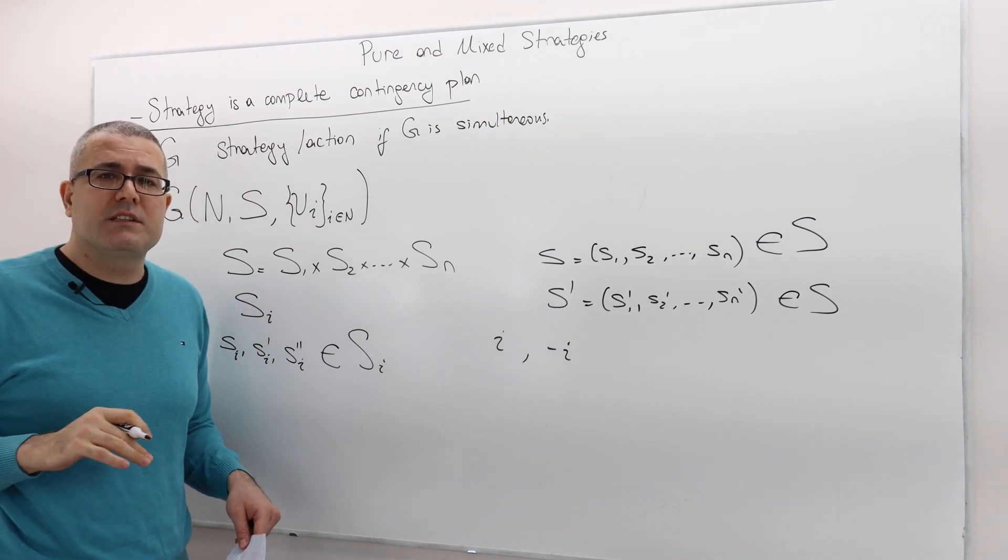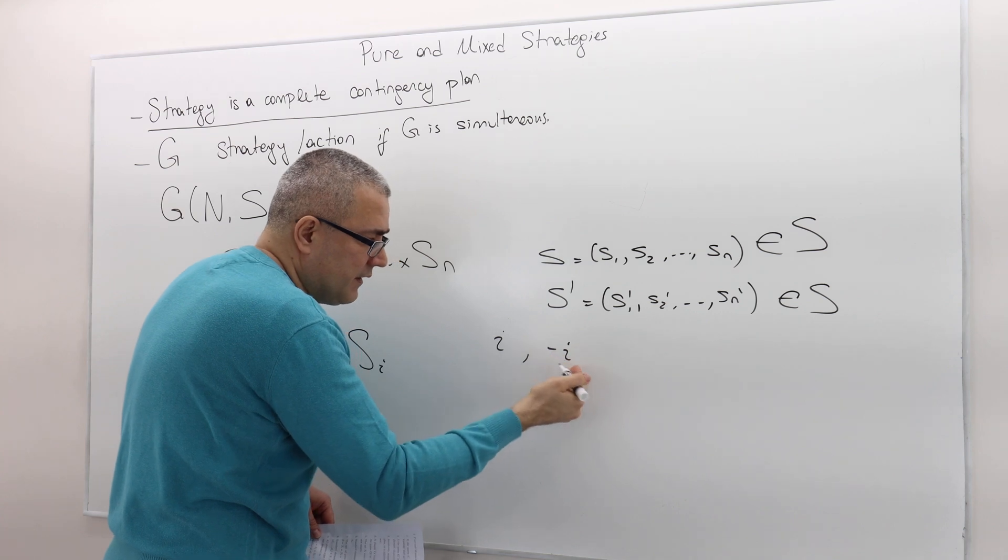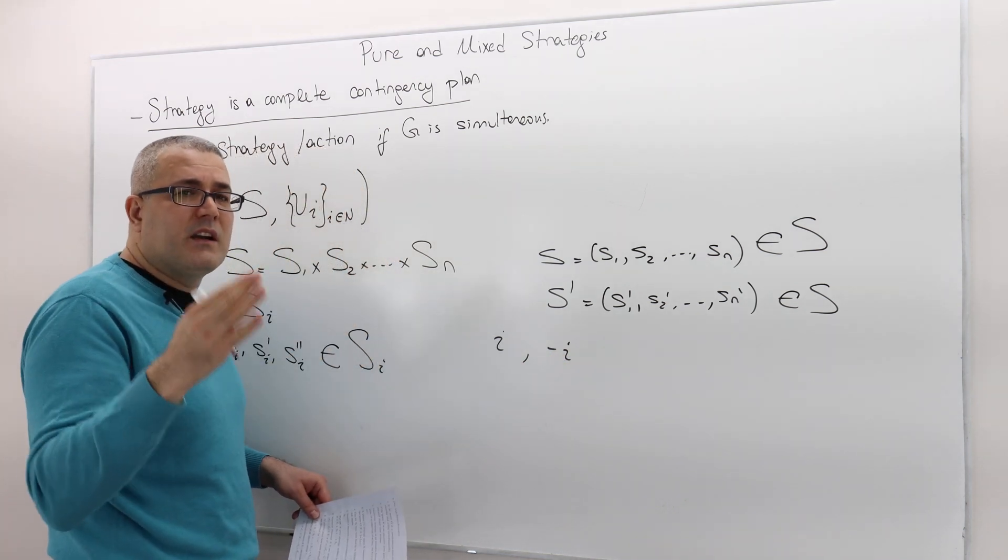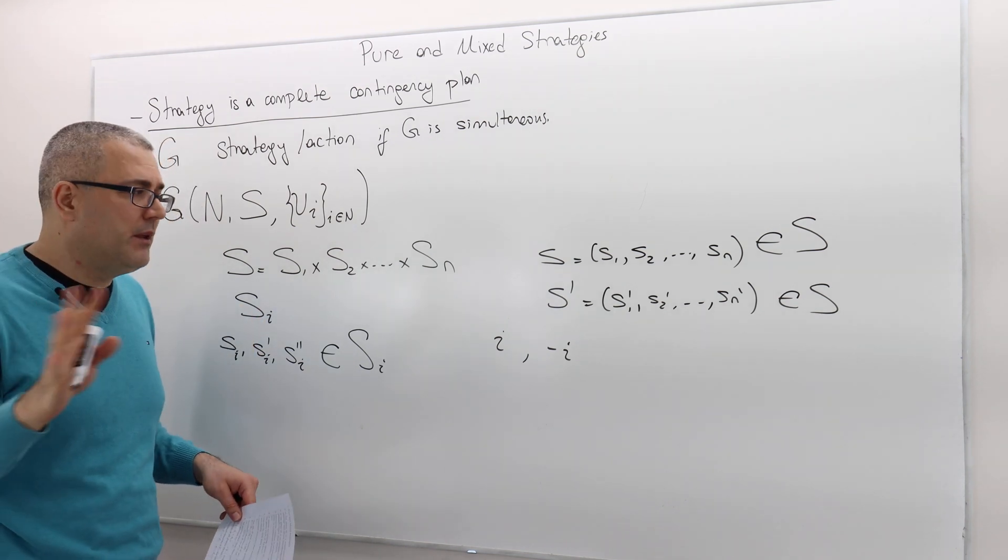If you have, for example, 100 players, minus I basically means all the other 99 players. The minus I refers to everybody else. So be careful.